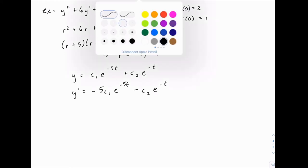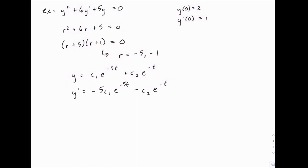Now if we plug in these initial values, if t equals 0, y equals 2, we have 2 equals c1. Now notice what happens: e to the negative 5 times 0 is just 1, and e to the negative 1 times 0 is also just 1. So we simplify things a lot by using 0 for our initial conditions here. It makes the algebra much simpler. So we have 2 equals c1 plus c2.